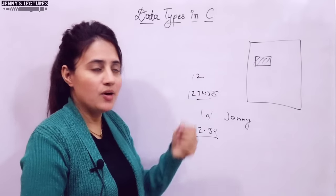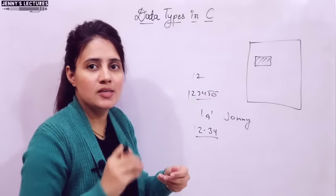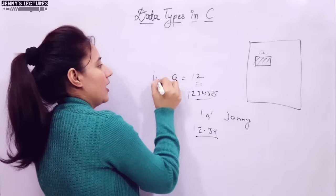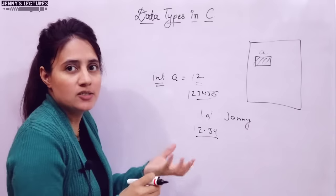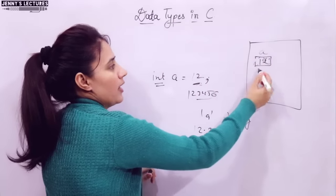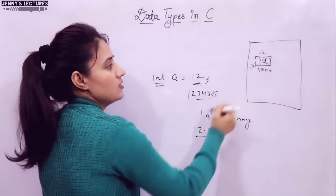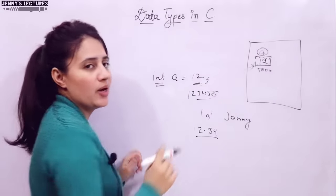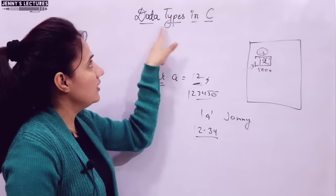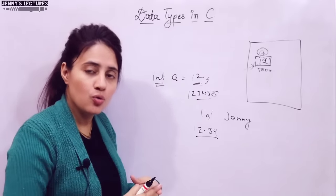We can access that memory. And when we name that memory — as I have told you what variables are — it's just a name given to a memory location so that we can easily access that memory. Like suppose I write: int A = 12. Some memory would be allocated — we will discuss the size of integer — and I am telling that you have to store 12 here. Some address would be there, like address 1000. So this memory has been reserved for us. So I hope you understand why we need data types in C — to define the type of data that you are going to store in a variable.